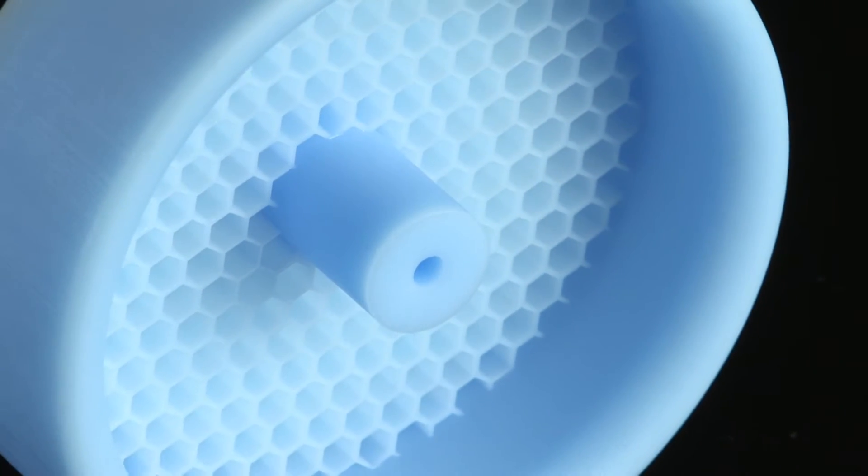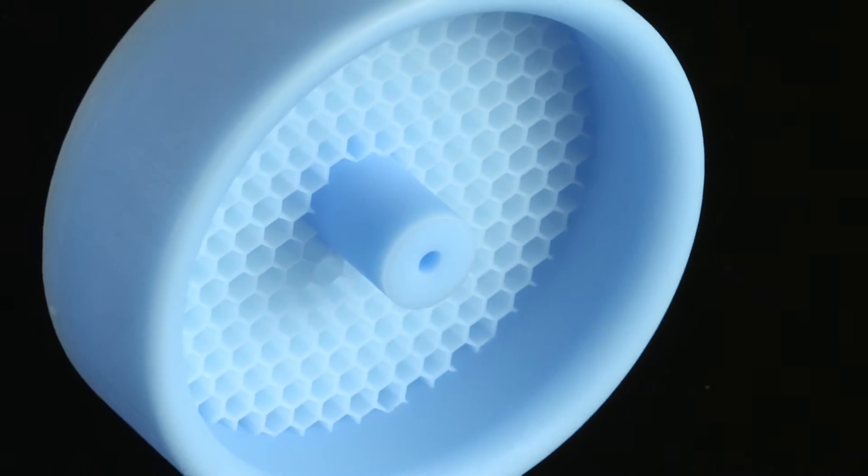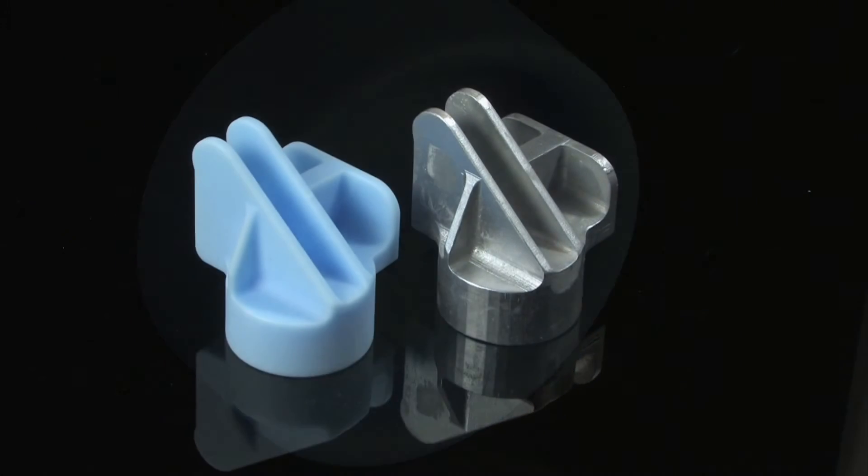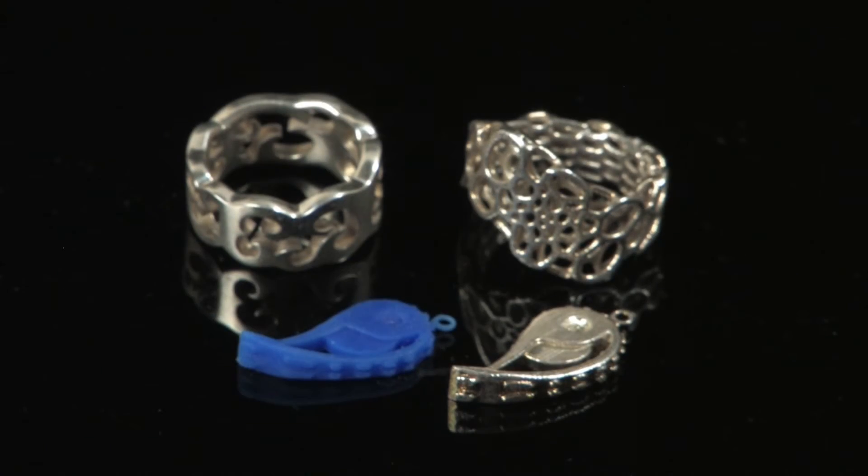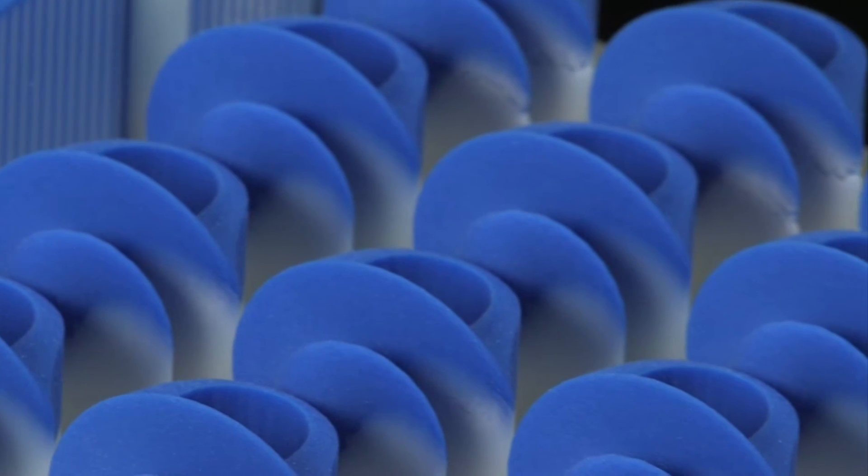Print highly detailed real wax patterns for direct investment casting to produce metal parts without additional labor or time required with traditional methods. Items ranging from jewelry to automotive and aerospace parts can be produced in small to medium volumes, saving weeks or months in the production cycle.